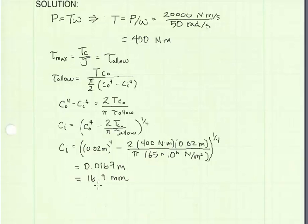The problem asks us to find the wall thickness of the shaft. So the thickness will be equal to the outer radius minus the inner radius. We get a value of 3.1 millimeters for the thickness of our shaft. And our problem is complete.